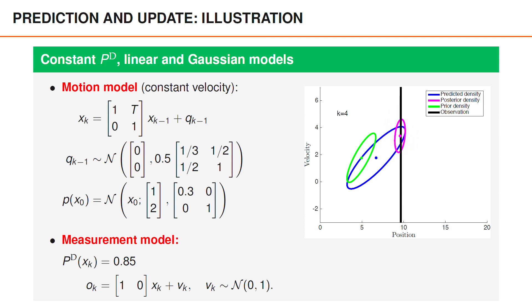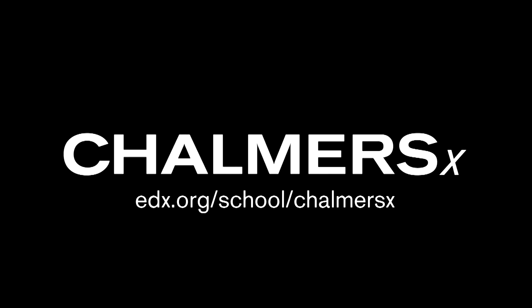To summarize, in this video we have studied the prediction and update steps under the assumption that the data associations are known. These equations are used extensively in the rest of this course, so please make sure that you understand them properly. The prediction step is identical to last week, whereas the update equation takes different forms depending on whether the object is detected or undetected.